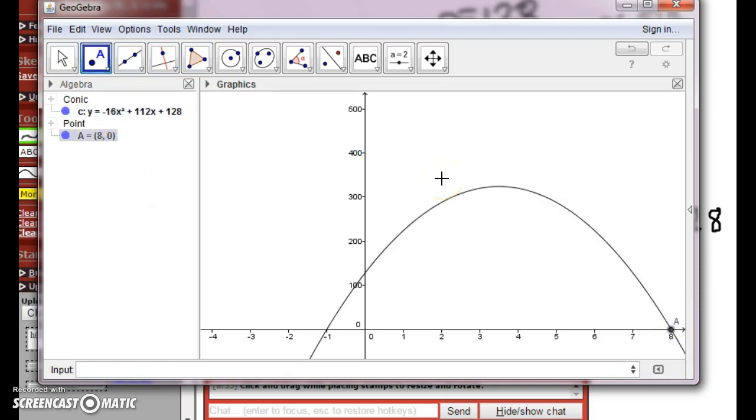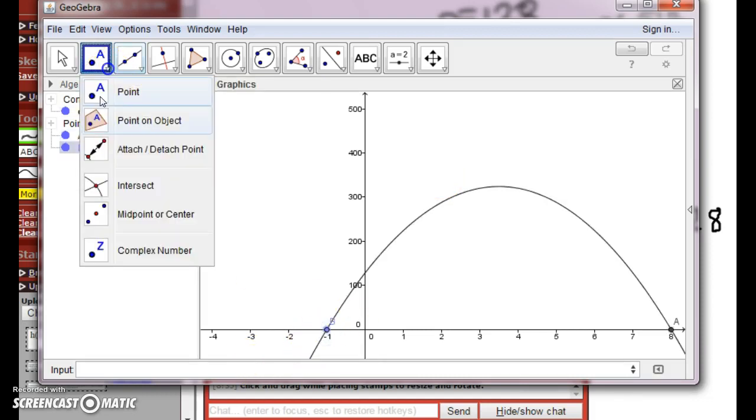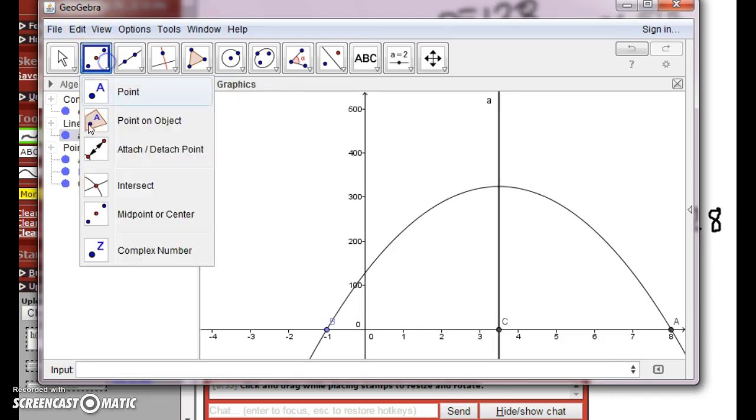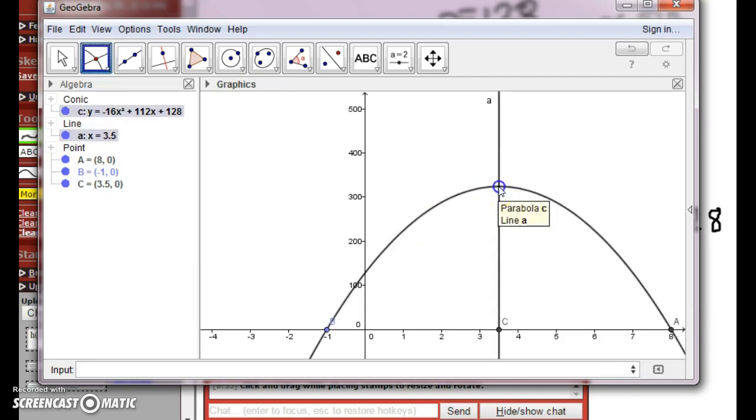They didn't ask you what the maximum height was, but let's just do that anyways. And we're going to do the midpoint, 3.5, x = 3.5, and then intersect, and it's going to be high, 324 feet.